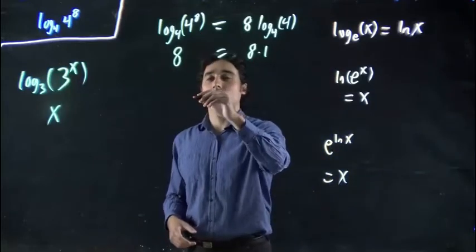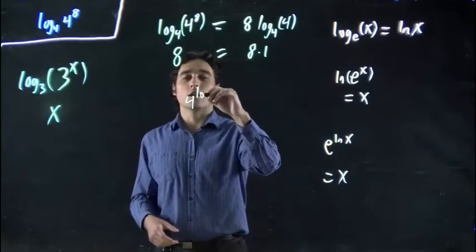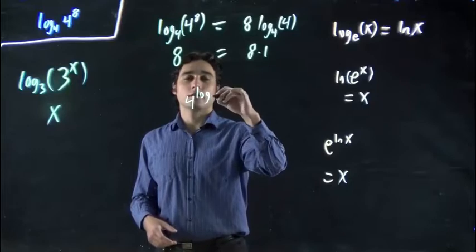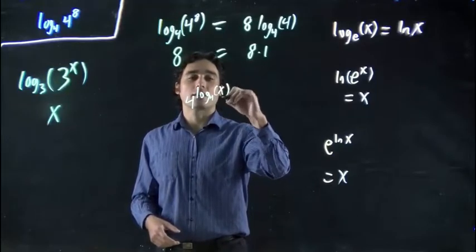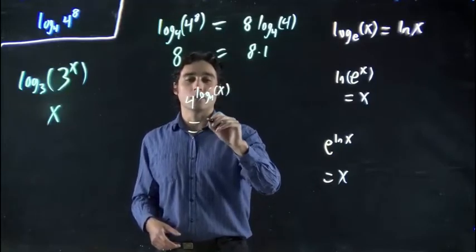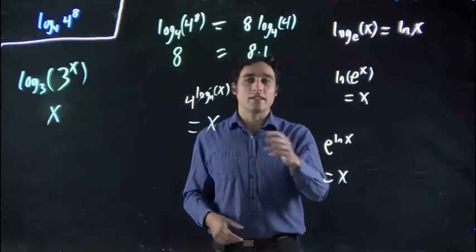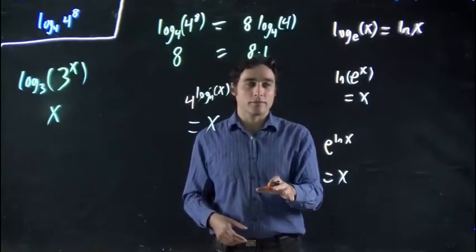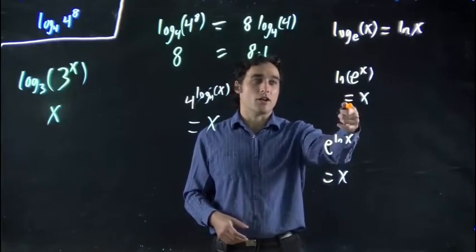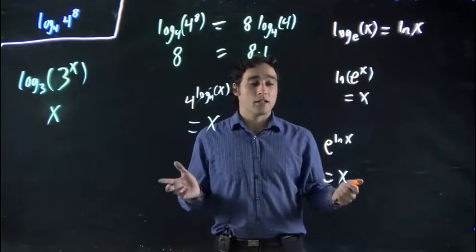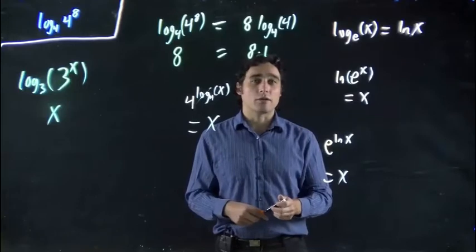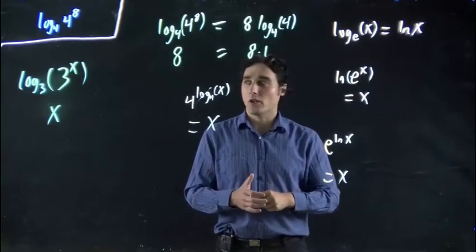So the same would be true here. If I had 4 to the log of base 4 of x, cancel, this would be equal to x. So these are how they cancel each other. But remember this ln is just log to the base e, just like any other log. The rules that we've been applying still apply. So, thank you.